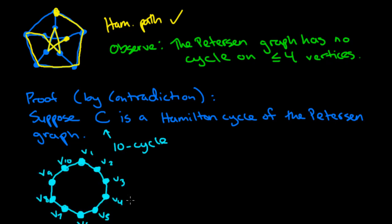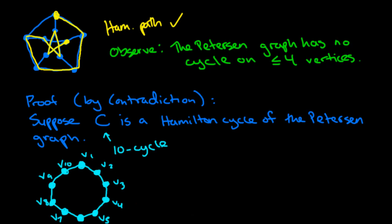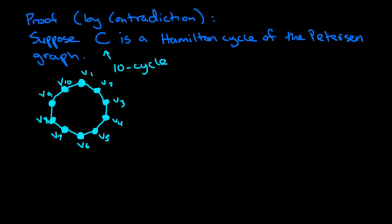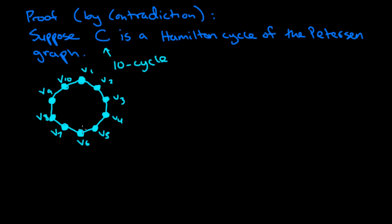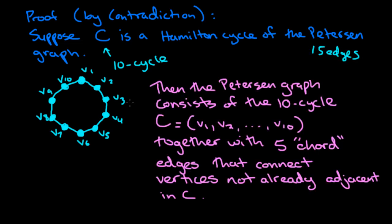So here's the ten cycle C, which I've labeled with vertices V1 to V10 for convenience. And it's important to realize that the Petersen graph has originally fifteen edges. So fifteen edges total. So what we know is that the Petersen graph consists of this ten cycle, which we've labeled V1 to V10,